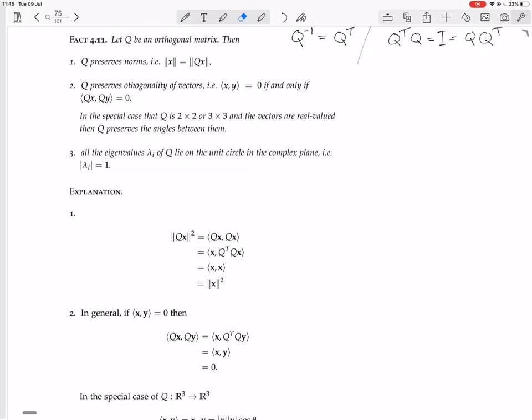So the norm of Qx squared is, of course, the inner product of Qx with Qx. But remember, there's that property of the inner product that for any matrix A, the inner product of Ax with y equals the inner product of x with A transpose y. And if A is real, then you don't need the conjugate sign on A, because the conjugate of A will just be A.